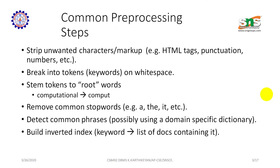The common pre-processing steps in an information retrieval model: First, strip unwanted characters and markup languages — for example, HTML tags, punctuation, numbers, etc. Then break into tokens based on keywords and whitespace. Next, stem tokens to root words — for example, 'computational' and 'compute.' Remove common stop words such as 'a,' 'the,' 'it,' etc. Detect common phrases, possibly using a domain-specific dictionary. Finally, build the inverted index — for example, a keyword mapped to a list of documents containing it.